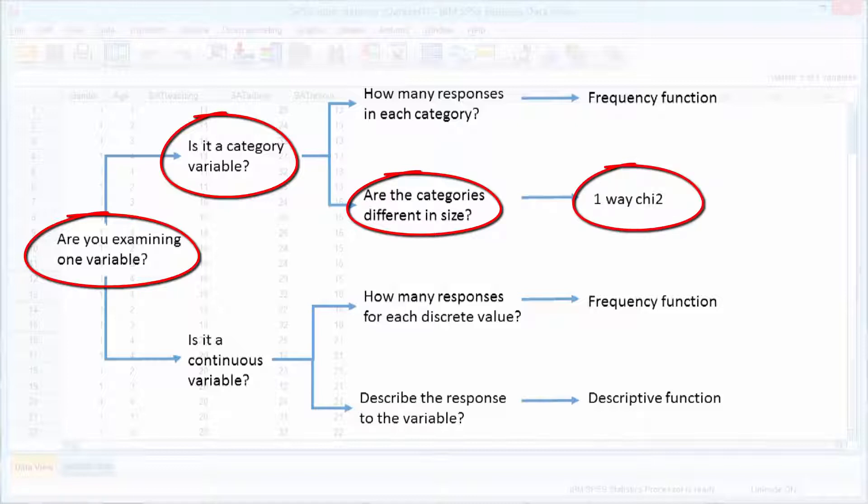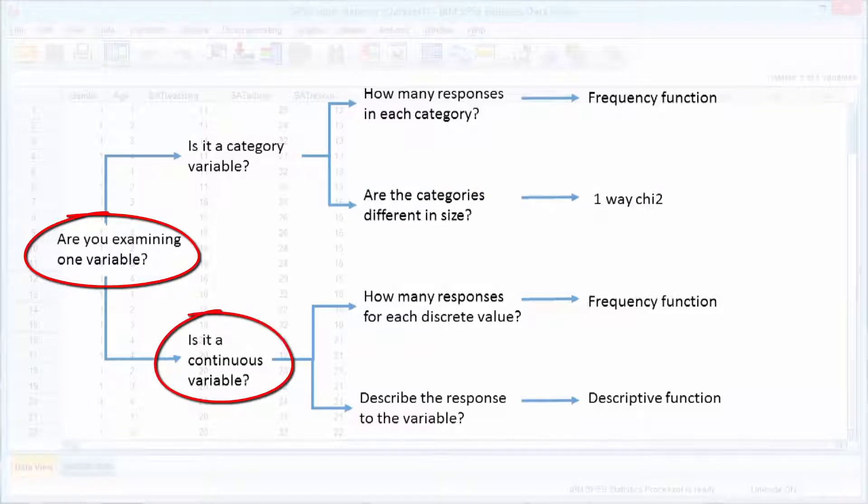If we are examining one variable and it's a continuous variable, then we have two main options available to us. Firstly, to count the number of responses for each discrete value in our data, we use the frequency function to do this.